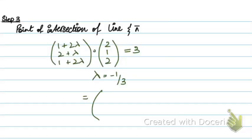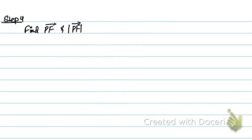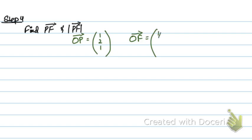The point of intersection is (1/3, 5/3, 1/3). This is the point of intersection of the line with the plane. The last step is to find vector PF, where P is the point from which we calculate the distance and F is the point of intersection with the plane. OP = (1, 2, 1) and OF = (1/3, 5/3, 1/3).